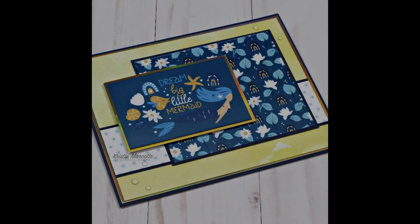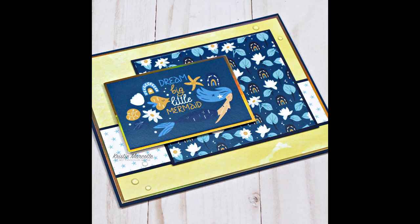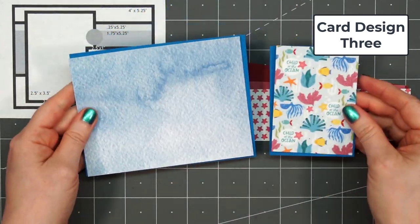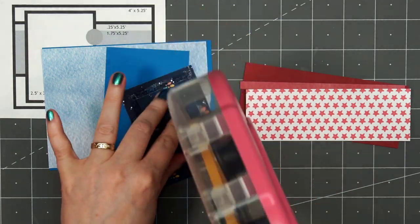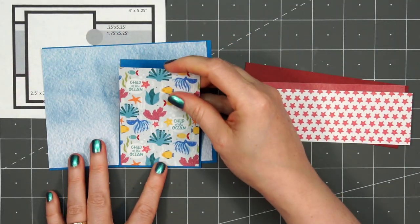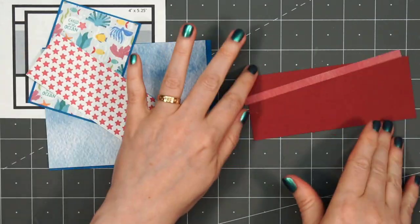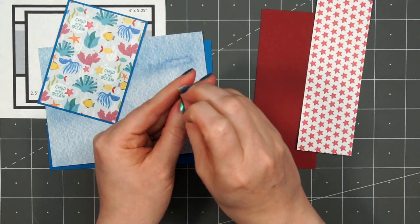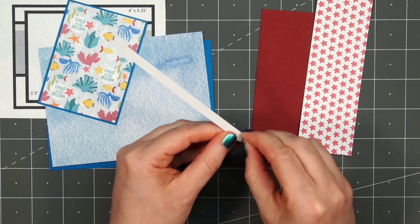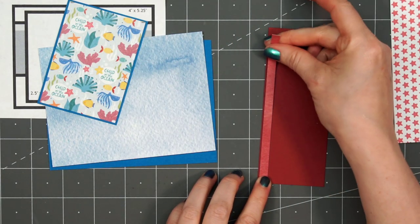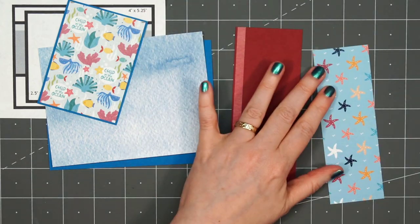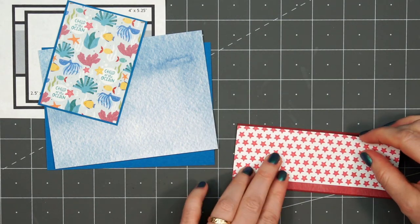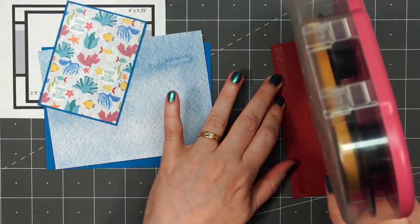Now moving on to card design number three. I'm using a card sketch from OWH. This is number 200. This is a fun sketch since you can feature an image or some pattern paper in that small rectangle and it also has the area for your sentiment. I'm using some of the blue watercolor paper for the background. Then I have this fun underwater scene for that smaller rectangle and it has the sentiment child of the ocean. I think that's really fun. I'll be layering everything on some blue cardstock and for the wider strip that goes across the card, I'm using the white paper with the small red starfish and then just a thin strip of the red watercolor paper, layering those on some red cardstock.